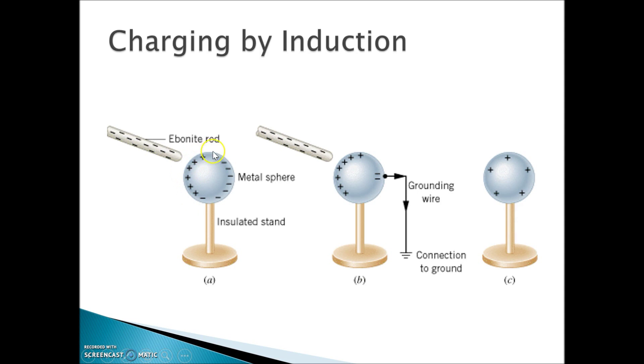If we take a wire and attach it to the negative side and then attach it to ground, that allows this negative charge to get even further away from this negatively charged rod and go into ground. We disconnect the wire and all of a sudden we're left with a net positive charge on our conductor.